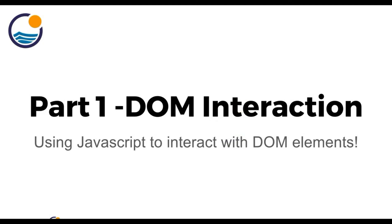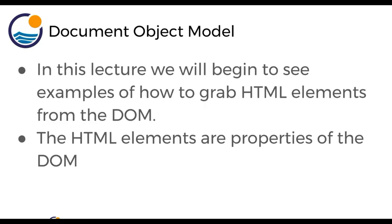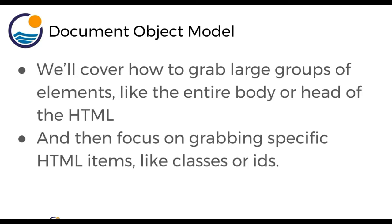Hello everyone, and welcome to part one — DOM interaction. In this lecture, we'll use JavaScript to actually interact with DOM elements. We're going to see examples of how we can grab HTML elements from the document object model. These HTML elements are the properties of that JavaScript object, which is the document. We'll cover grabbing large groups of elements like the entire body or just the head, and then focus on grabbing specific items like a certain class or a certain ID.